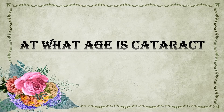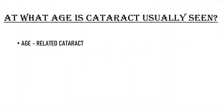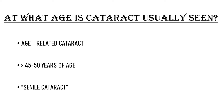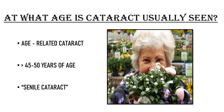At what age is cataract usually seen? The most common type is age-related cataract, which usually develops after 45 to 50 years of age. It is also known as senile cataract. As the name suggests, this type of cataract develops as part of the aging process — as we grow older, our lens loses its ability to maintain transparency and cataract formation occurs.